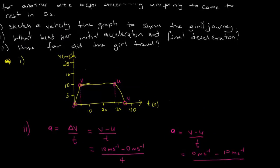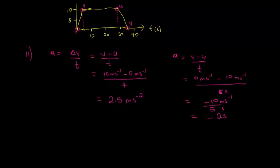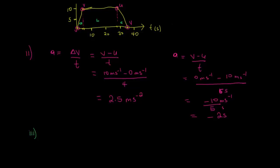For part three we refer to the diagram. To find the distance traveled we simply need to find the area under the velocity-time graph. We can label three sections: point A, point B, and point C. First we find the area of section A, the area of section B, and the area of section C.